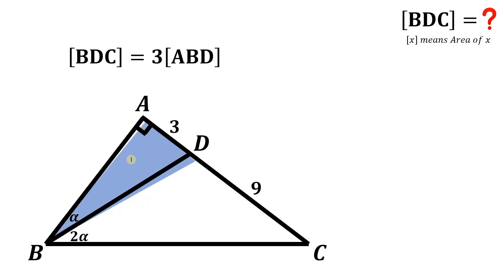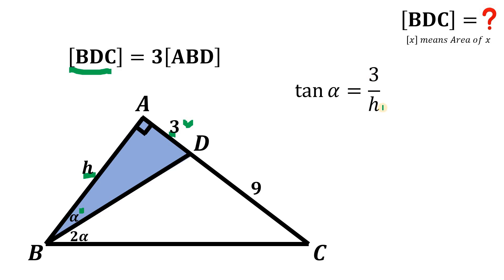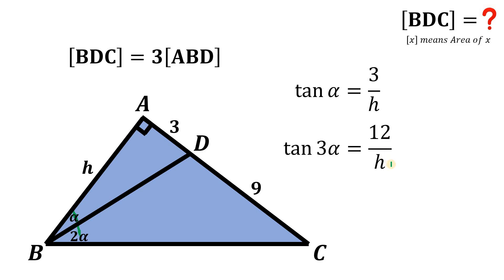So the area of triangle BDC is three times the area of triangle ABD. If we get the area of triangle ABD, we can find the area of triangle BDC. The base is 3, so let's call the height h. In this right triangle, alpha has an opposite side and adjacent side, so tangent of alpha equals 3 over h. Using the big right triangle and tangent again, tangent of 3 alpha equals 12 over h.